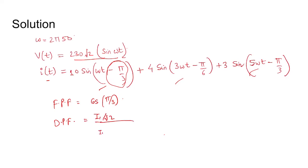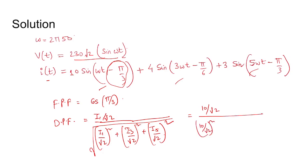And distortion power factor is I1/√2 divided by the square root of (I1/√2)² plus (I3/√2)² plus (I5/√2)². So distortion power factor is 10/√2 divided by square root of [(10/√2)² + (4/√2)² + (3/√2)²]. Total power factor is distortion power factor into fundamental power factor.